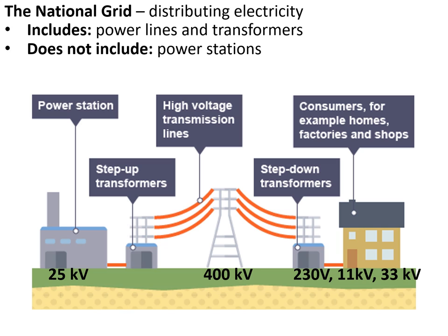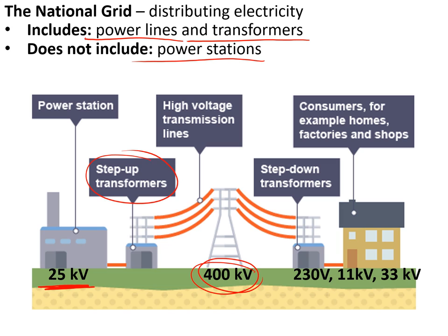The national grid distributes electricity from where it is made to where it is used — it includes the power lines and transformers but not the power stations. Electricity is produced at 25,000 volts (25 kV), stepped up by step-up transformers to 400 kV for high-voltage transmission lines, then stepped back down to 230 V for homes, 11 kV for light industry, and 33 kV for heavy industry.